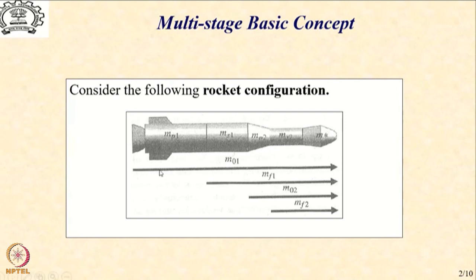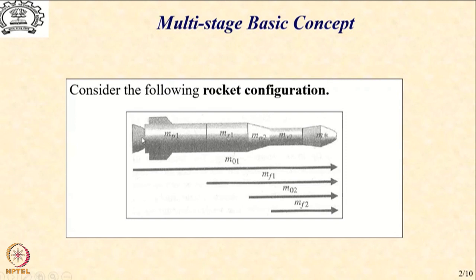Let us now introduce additional symbology that we are going to use in our solution procedure. We introduce M01 which is defined as the starting mass for stage 1 operation. In the present case, when stage 1 starts operating, it is almost like the complete rocket and in most cases this will be the same as your lift-off mass. In some special cases it may not be so, as we shall see later. As the stage starts operating, the propulsion gets burnt until you finish all the propellant, and once you finish all the propellant, what you are left with is MF1, which is the final mass for stage 1 operation.